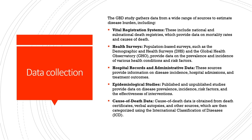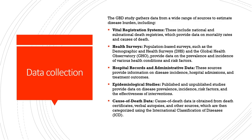Before we move on to how DALYs are calculated, we must also see how the GBD study gathers data and what the different sources are. The vital registration systems of different countries are an important source, which includes national and sub-national death registries, because they provide data on mortality rates and causes of death. Different health surveys — such as NFHS or the DHS surveys in the Indian context — are also important sources of data. The Global Health Observatory can also be accessed publicly by researchers and members of the public, providing data on prevalence, incidence of various health conditions and associated risk factors.